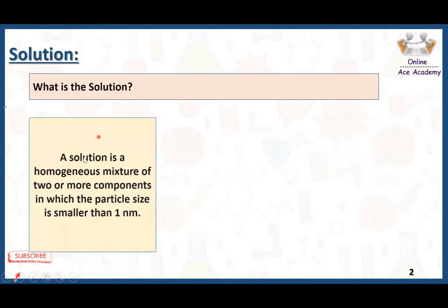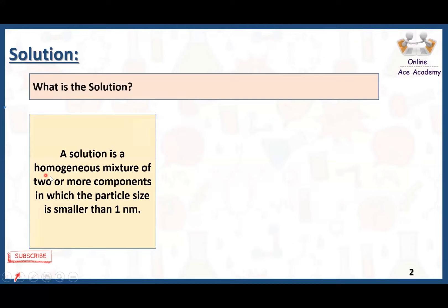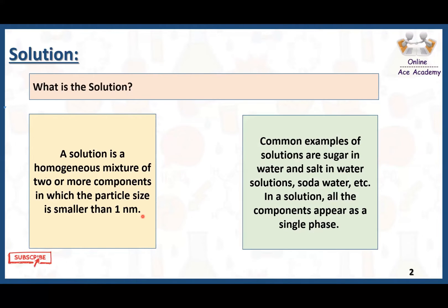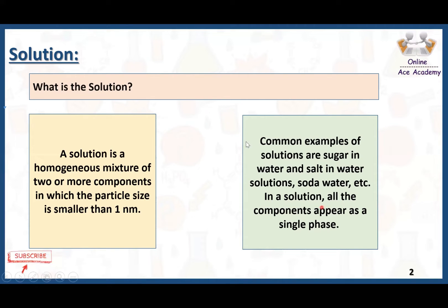What is a solution? A solution is a homogeneous mixture — homo means same — of two or more components in which the particle size is smaller than one nanometer. The particles of solutions are so very small that we can't see them with the naked eye. Common examples of solutions are sugar in water, salt in water, soda water, and vinegar — water and acetic acid make a solution because they form a homogeneous, uniform mixture.